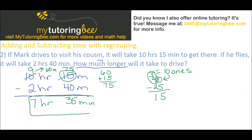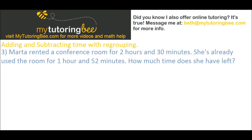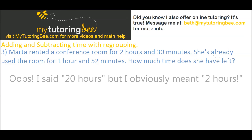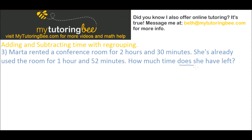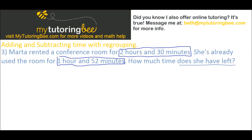Let's do another subtraction problem — this one will require both types of regrouping: hours to minutes and then tens to ones. Marta reserved a conference room for 2 hours and 30 minutes, and she's already used 1 hour and 52 minutes of that time. How much time does she have left? 'Left' is our keyword for subtraction. So I set up 2 hours and 30 minutes minus 1 hour and 52 minutes.